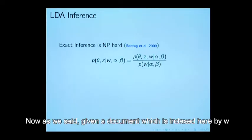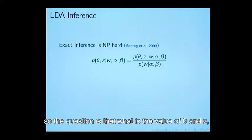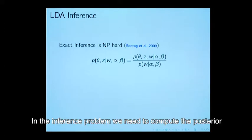As we said, given a document which is indexed here by w, the question is what is the value of theta and z? This often sometimes called the inference problem. In the inference problem, we need to compute the posterior distribution of theta comma z given w and alpha beta, suppose unknown.